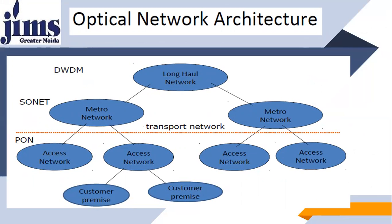Looking at the optical network architecture, you have basically different layers. Look at this section — Transport Network. This Transport Network comes into the picture after DWDM and SONET, which we already discussed in previous video lectures. SONET is Synchronous Optical Network, and DWDM is Dense Wavelength Division Multiplexing. PON is Passive Optical Network, which we will discuss later in this lecture.